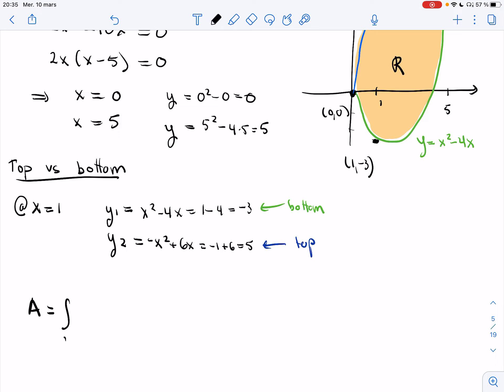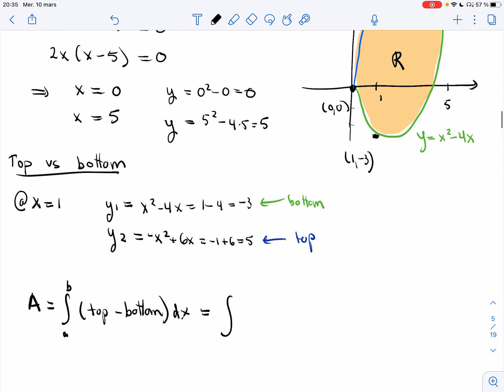So we always say it's from A to B, top minus bottom dx. And so top, that would be blue, so it's minus x squared plus 6x. And bottom, that's the green, so x squared minus 4x.